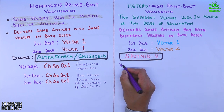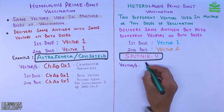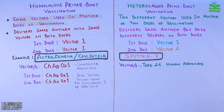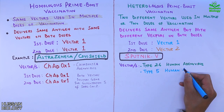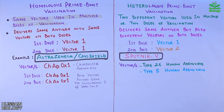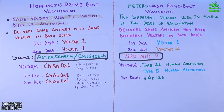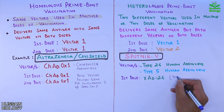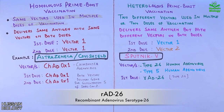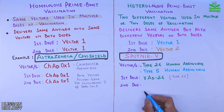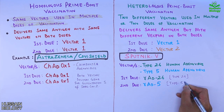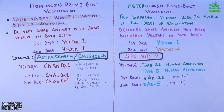Sputnik V uses two types of vectors: type 26 and type 5 human adenovirus vectors. In its first dose it uses rAd26, the recombinant form of type 26 human adenovirus, whereas in its second dose it uses rAd5, the recombinant form of type 5 human adenovirus.